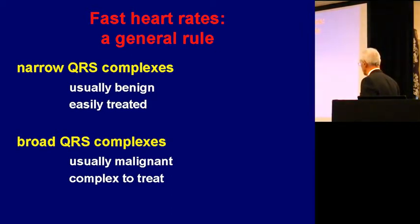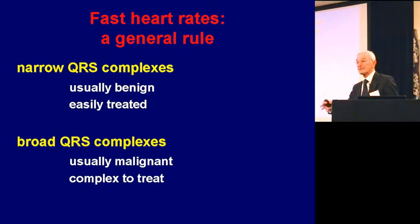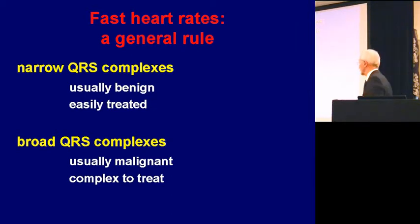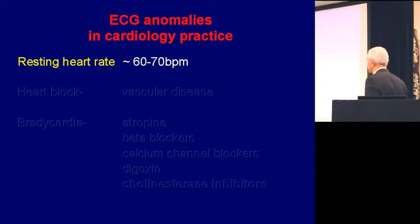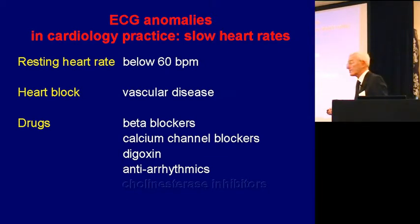The harder ones to treat are usually broad complex ones. The complexes, instead of being narrow, are very broad. And it's usually ischaemic heart disease. The risks that you've been hearing about generate disease in the coronary arteries, and put people at risk of this, as do some of your psychotropic drugs. A resting heart rate is normally about 60 to 70 beats a minute, but it can be slowed down with vascular disease.